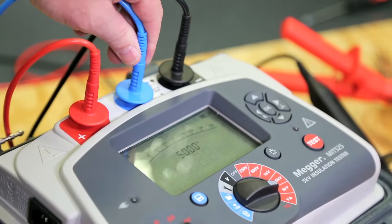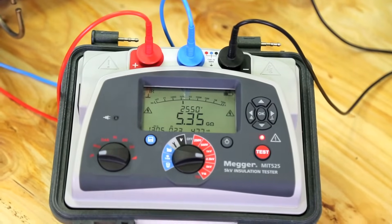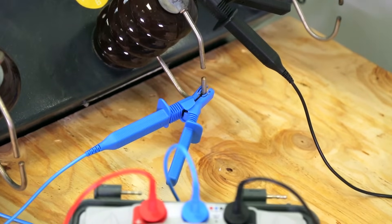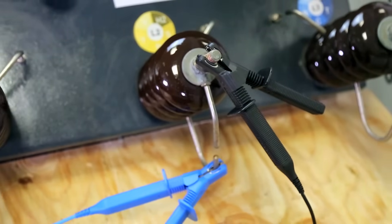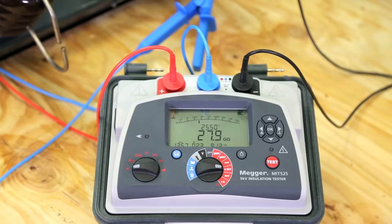The guard terminal ensures you measure the insulation that you want to measure. It measures and discounts any surface leakage current. It is key to the accuracy of the insulation test. That's why Megger's guard terminal performance is specified and offers unmatched accuracy.